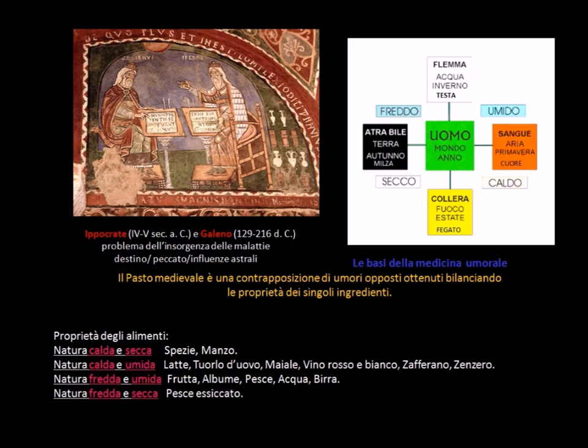Il fuoco è caldo e secco, l'acqua fredda e umida, la terra fredda e secca, l'aria calda e umida. I quattro elementi fondamentali della filosofia antica funsero da base per lo sviluppo della teoria umorale.